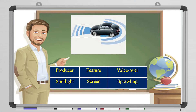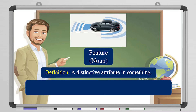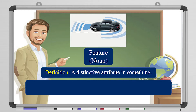So we have a car with back sensors and front sensors. The sensors are features of the car. The word 'feature' is a noun — it is a distinctive attribute in something. For example, the feature of humans is the brain and the ability to think. The example sentence is: there are front and back sensors in the car — this is an excellent safety feature.